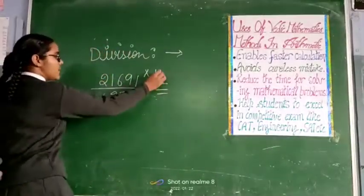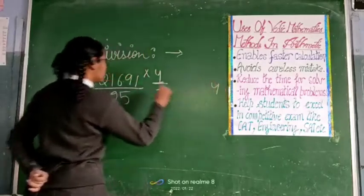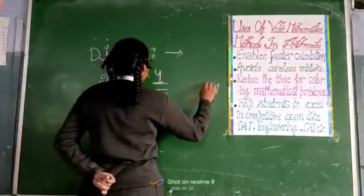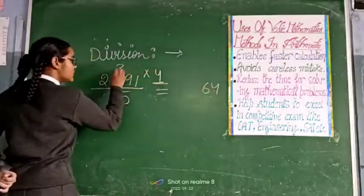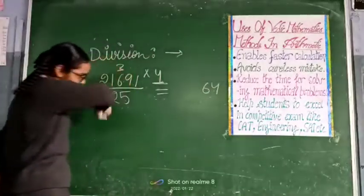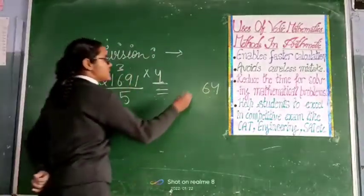Then we multiply 4 by 1, which makes 4. 4 by 9, which makes 36. 4 and 6, which makes 24. Plus 3, which makes 27.